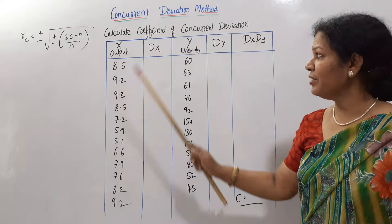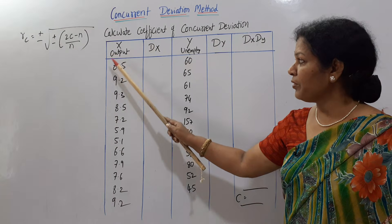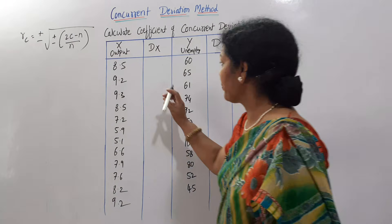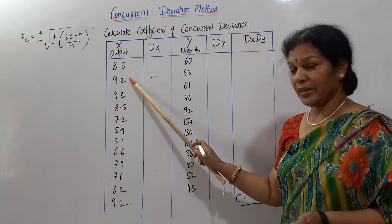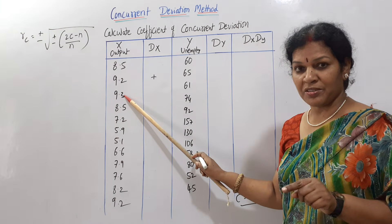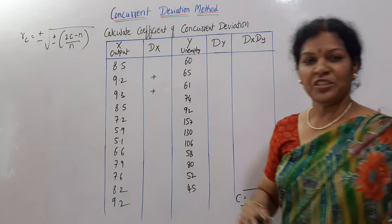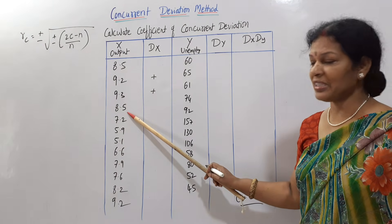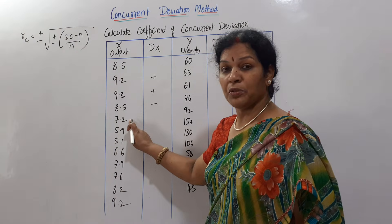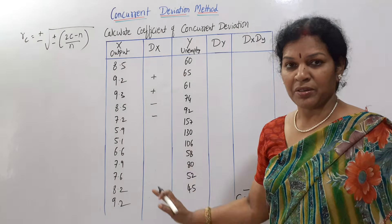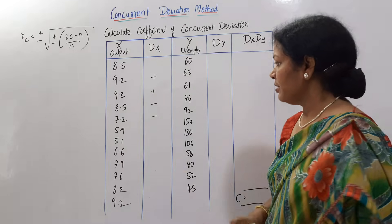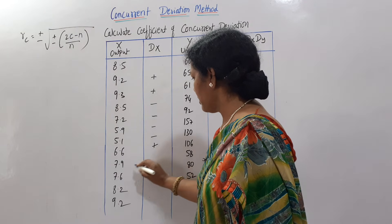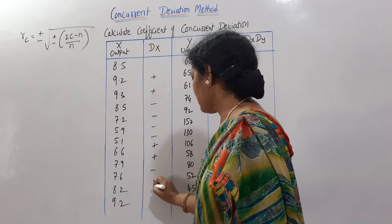For dx, take the base number 8.5 — compared to 8.5, the next value 9.2 is more, so we put plus. Then 9.2 compared to 9.3: more, so plus. Each number is compared only with the next number. Then 9.3 compared to 8.5: less, so minus. 8.5 compared to 7.2: less, so minus. More gives plus, less gives minus. Continuing: minus, minus, and compared to 5.1, the value 6.6 is more, so plus.